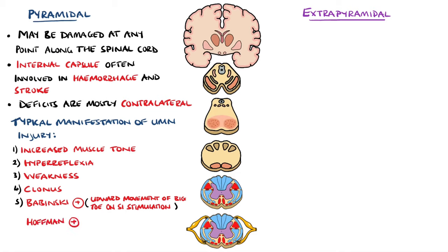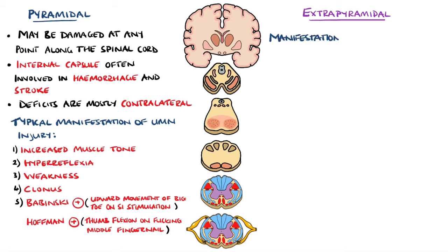Hoffman's sign is a similar sign used for the upper limbs, where the fingernail of the middle finger is flicked down and we're looking for flexion and adduction of the thumb. Hoffman's sign, however, is a deep tendon reflex that is normally fully inhibited by the corticospinal tract.